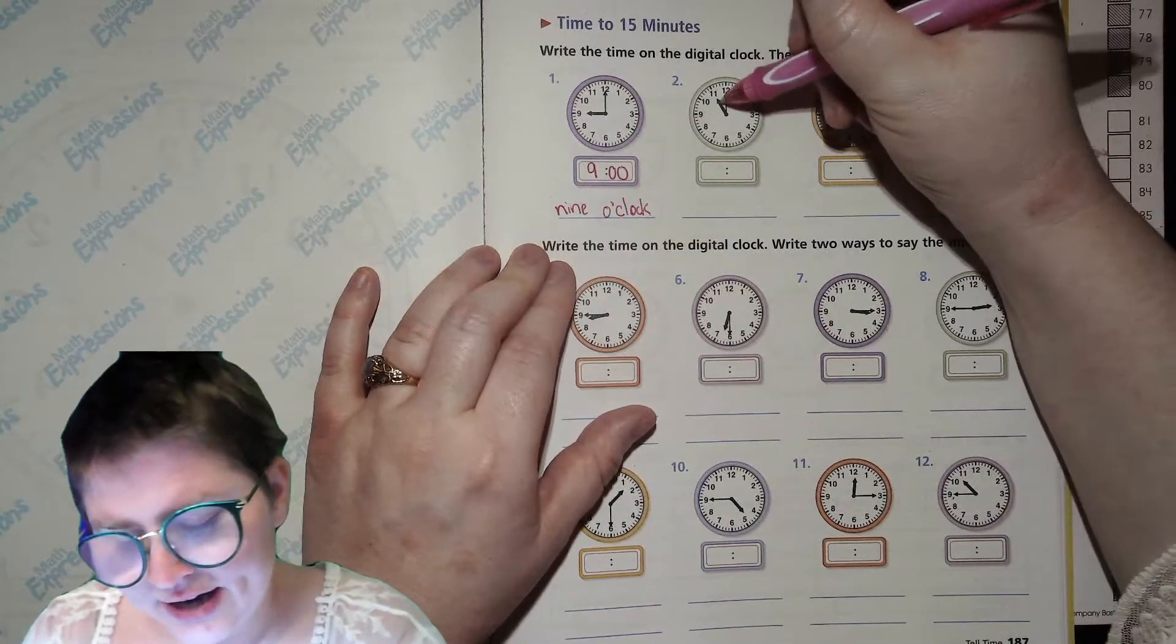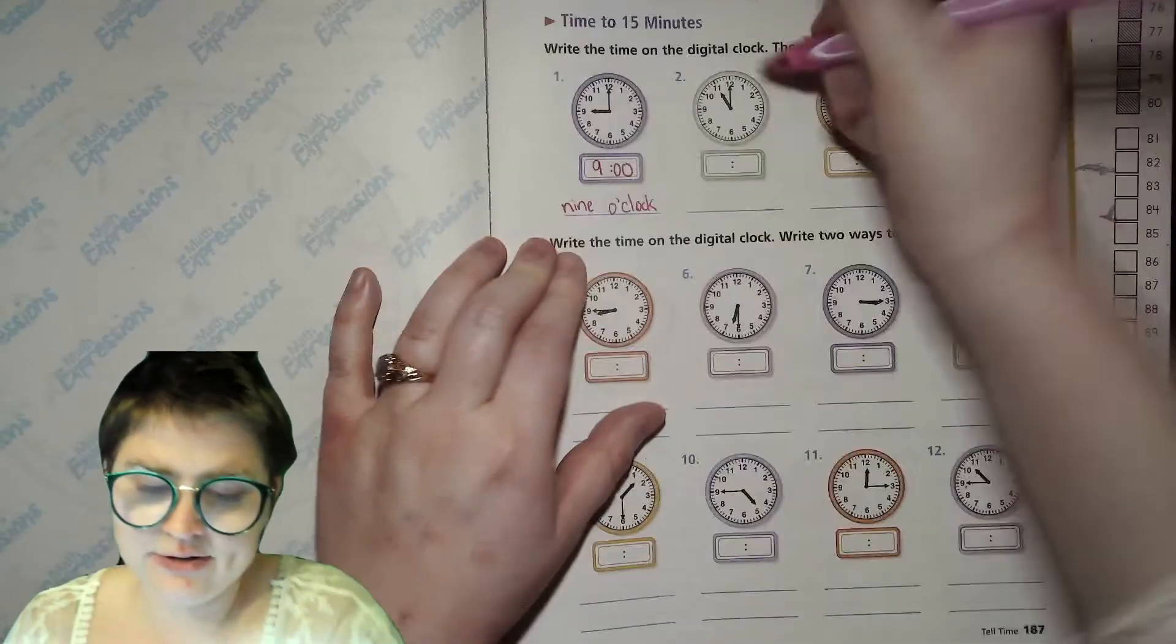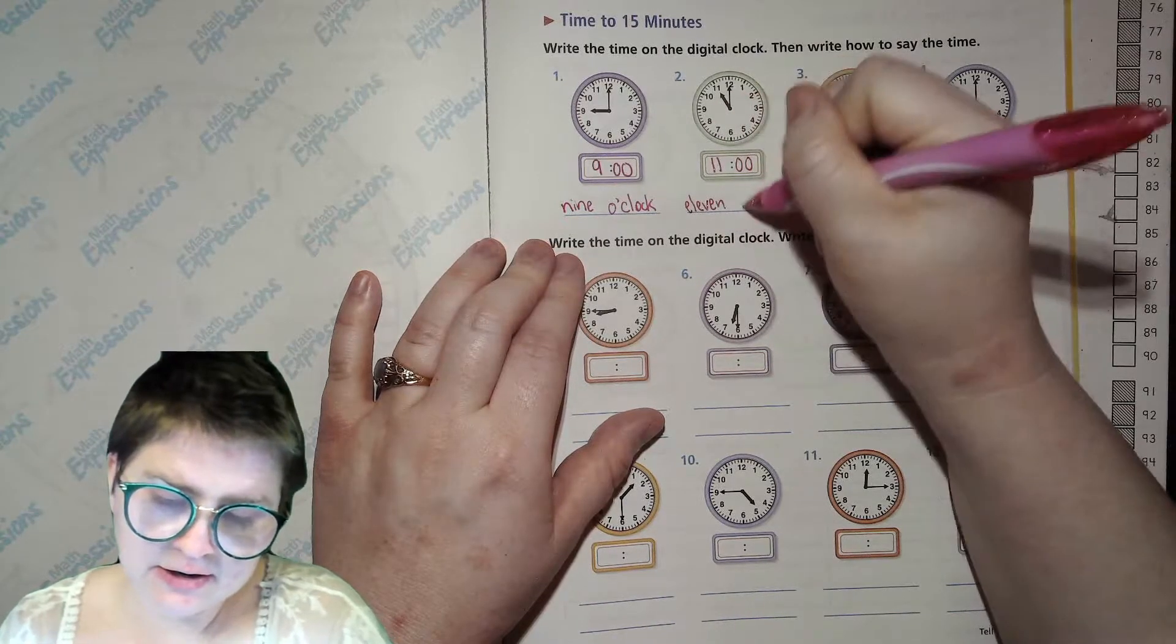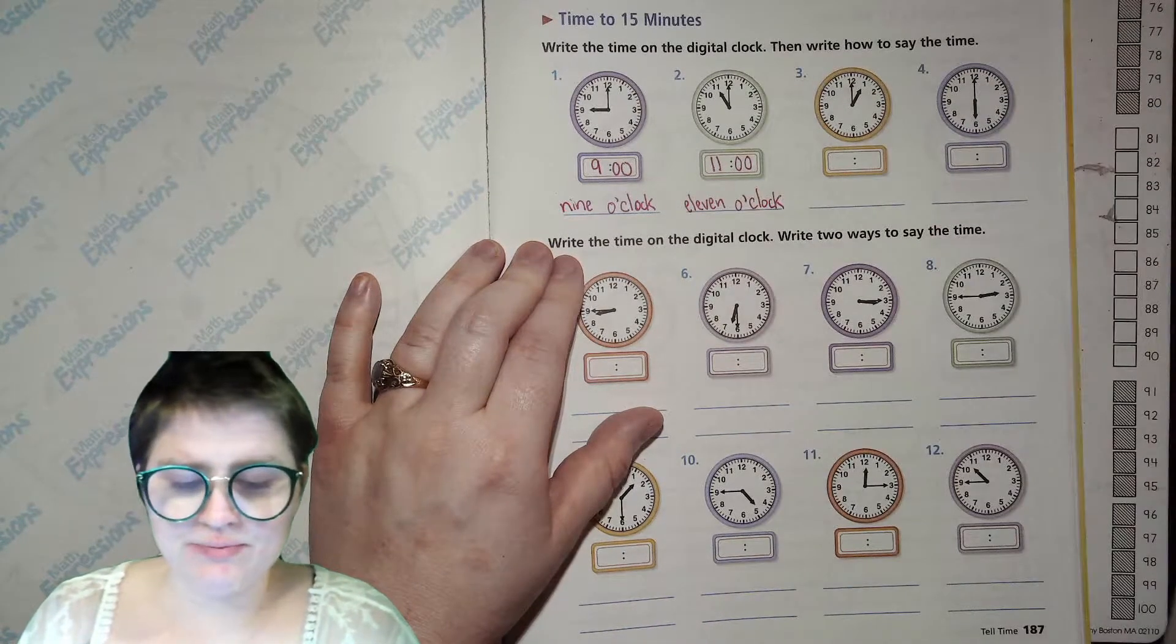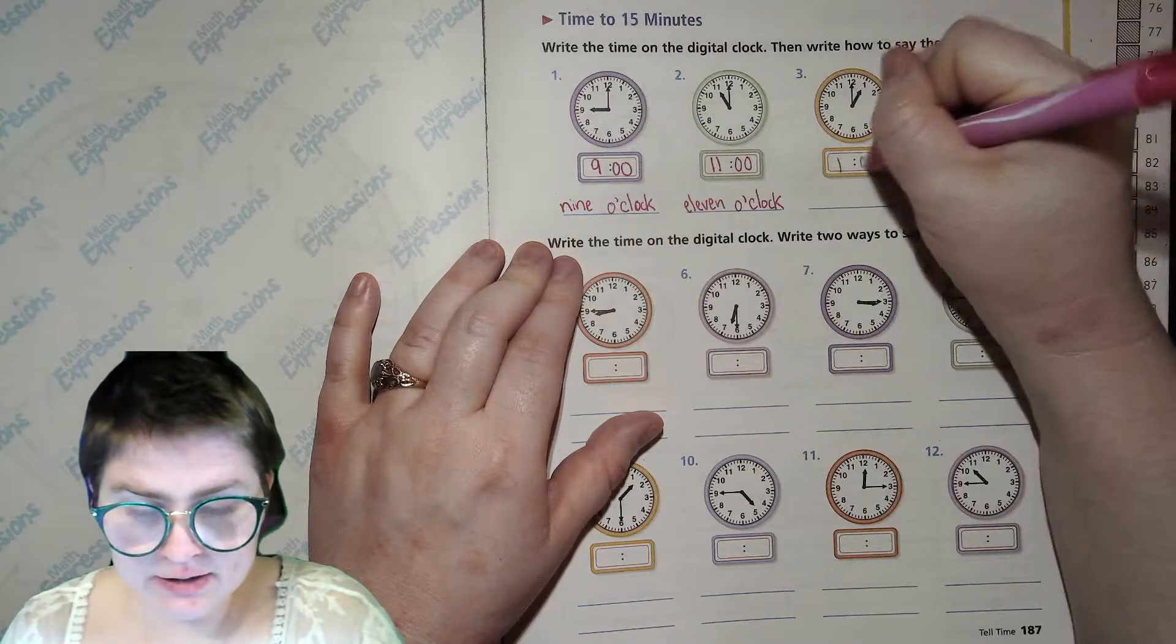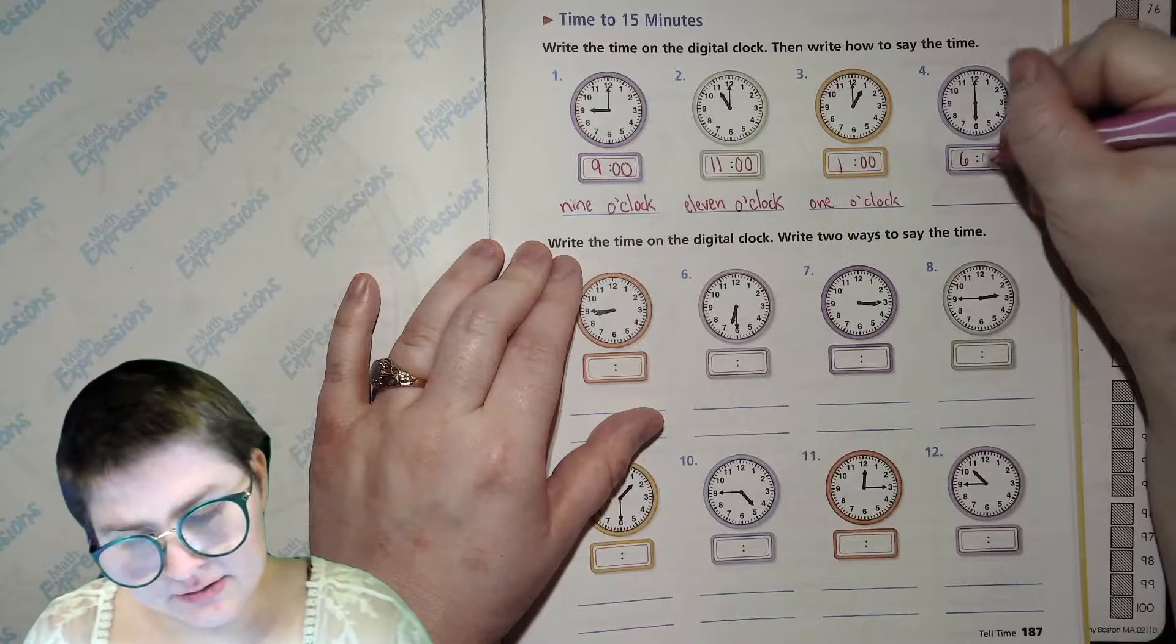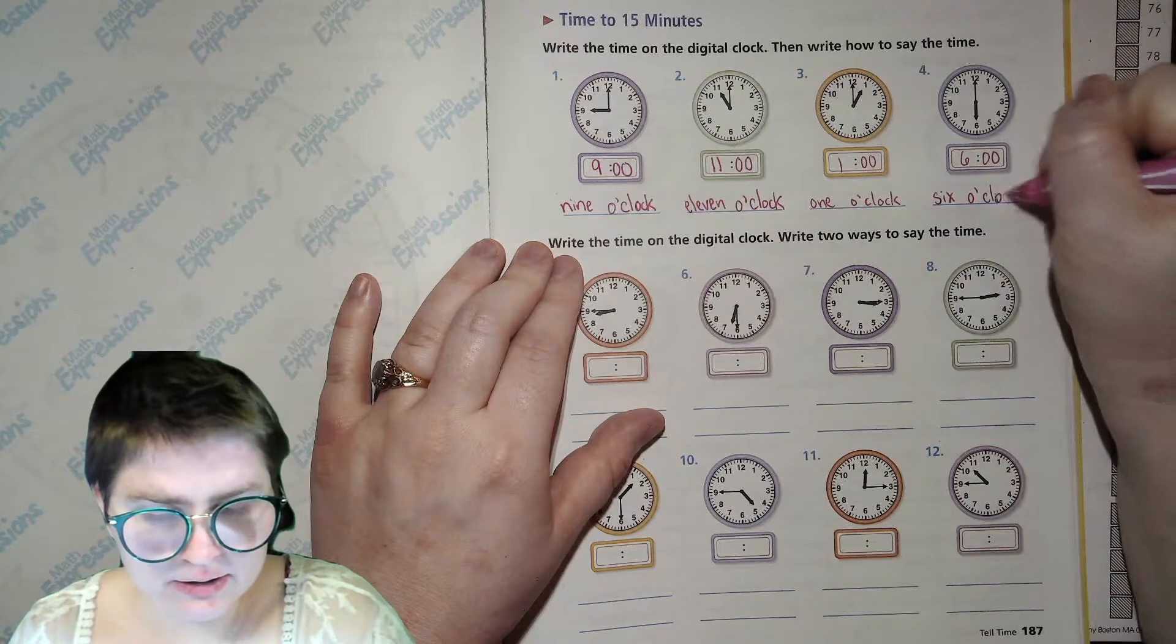Next one. Look at that hour hand, the short hand. It's on the 11 and the minute hand is also on the 0. So 11, 0, 0 on the other side of the colon. We say 11 o'clock. You try these two on your own. All right. So this one is 1 o'clock. 1 o'clock. And this one is 6 o'clock. 6, 0, apostrophe, clock.